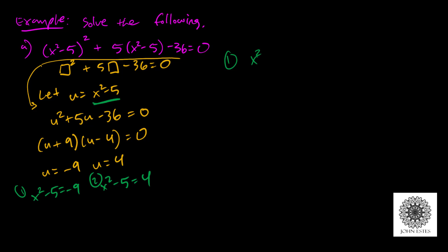For the first equation, x-squared equals negative 9 plus 5, which is negative 4. Taking the square root of both sides gives plus or minus the square root of negative 4. Depending on your textbook, some say this has no solution; others go into complex numbers, giving plus or minus 2i, since the square root of 4 is 2 and the square root of negative 1 is i. For the second equation, x-squared equals 4 plus 5, which is 9. Taking the square root gives plus or minus 3.